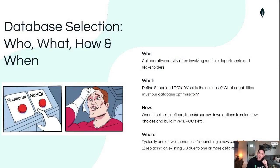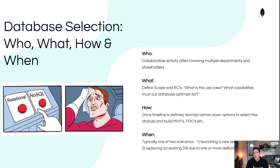So for database selection, this is going to be an activity that involves potentially multiple stakeholders. Now depending on the scope of the application, whether it is internal facing — maybe it's just one department — or maybe it's our core product that is going to be customer facing and as such necessitates the input from multiple departments. The thing to keep in mind here is this is going to be most likely a very collaborative process.